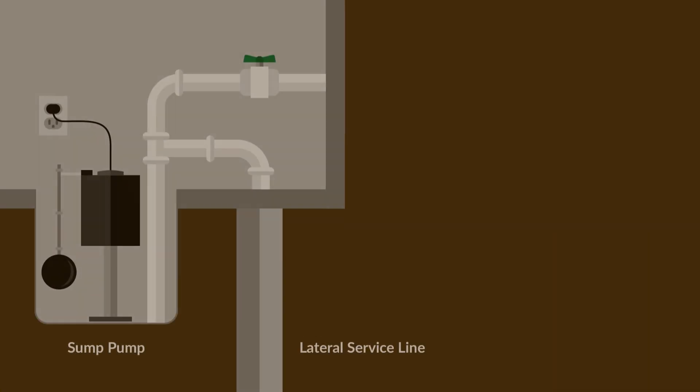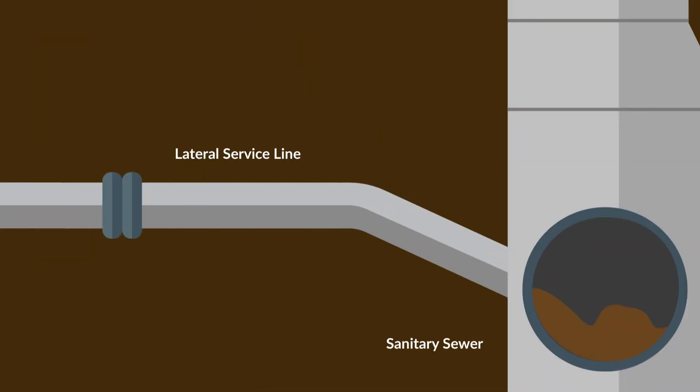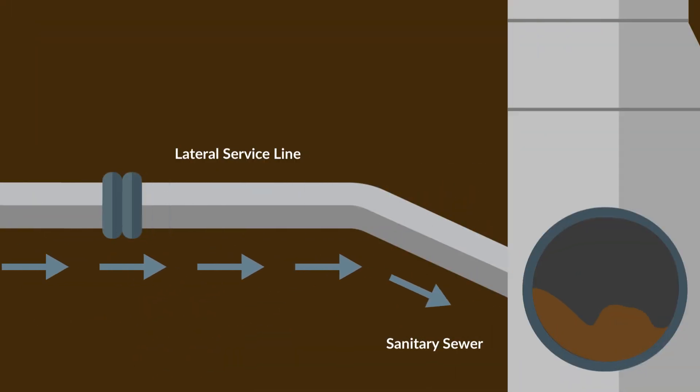In the 50s and 60s, it was common practice to connect sump pumps directly to the sanitary sewer. City code now prohibits this type of connection. However, there are still many properties that have sump pumps pushing groundwater and stormwater into the sanitary sewer. This is called cross connection.